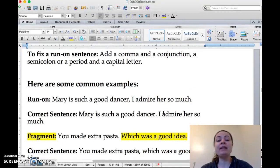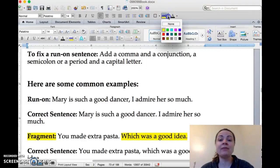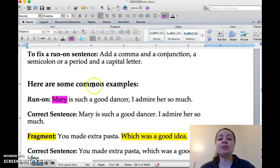Here's a run-on: Mary is such a good dancer, I admire her so much. A good thing to do is to identify the parts of the sentence. The first part, we have the subject, and our subject is Mary. What is Mary doing or being? Mary is. And then what? The complete thought is such a good dancer.